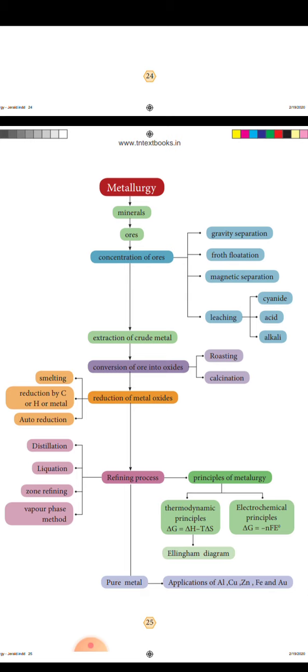Reduction of metal oxides. There are several methods: Smelting, Reduction by carbon, Reduction by hydrogen, Reduction by metals, Auto-reduction.